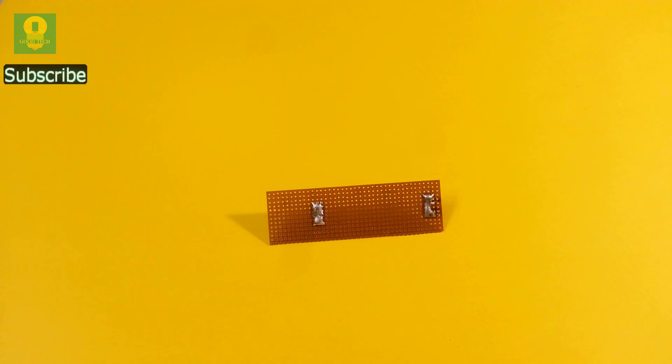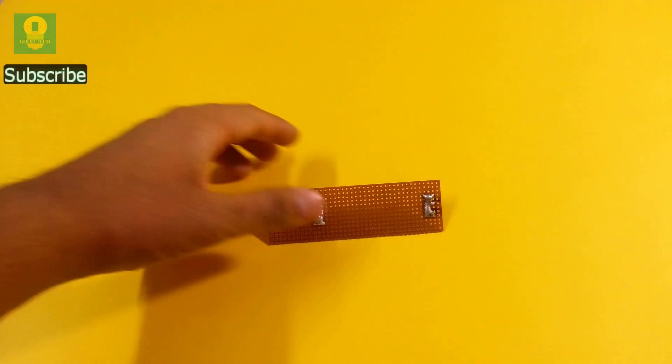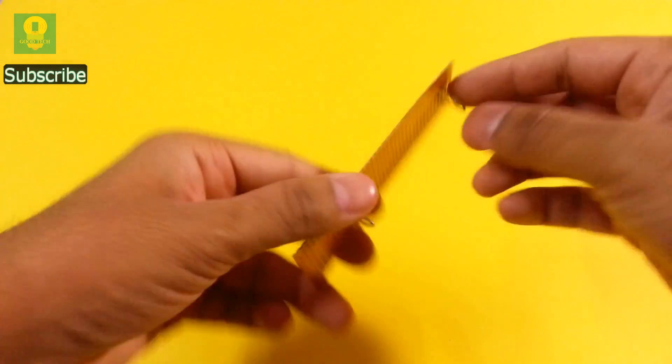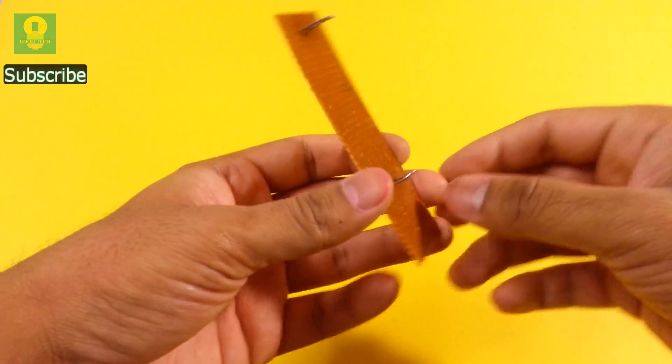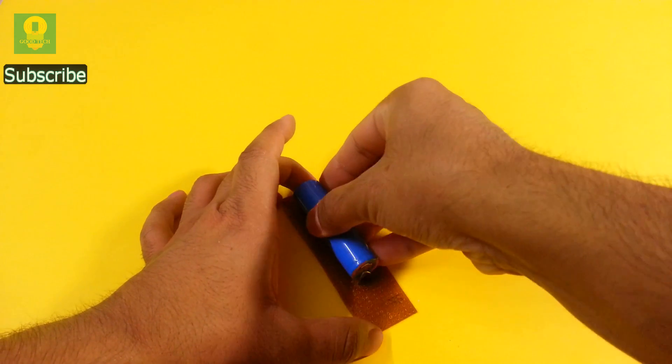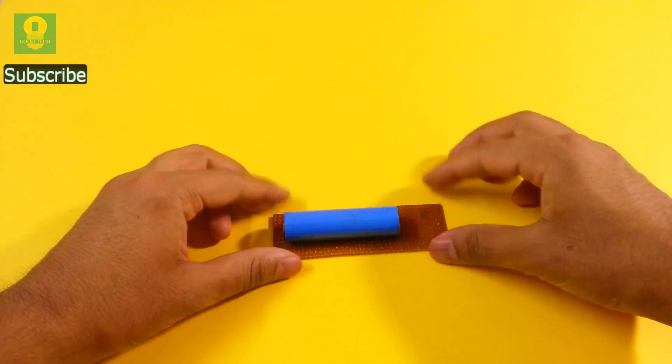Make sure to solder really well so that the copper does not wear off from PCB. This will provide a firm support to the clips. Insert the cell to verify the size. If everything is fine,